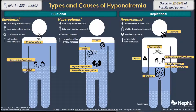With hypotonic hyponatremia, it's very important to assess the patient's volume status. If we look at a urine osmolality, we can classify hypotonic hyponatremia in two ways. First, we can have maximally dilute urine with an osmolality of less than 100 milliosmoles per liter, and we see this with conditions that cause excessive thirst and water intake, like psychogenic polydipsia.